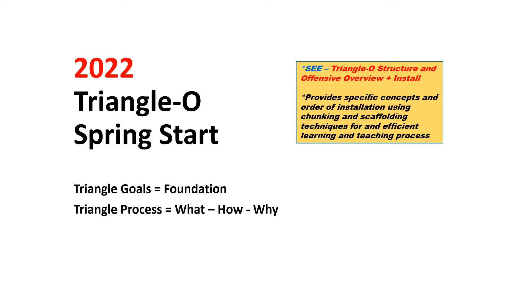Hi, Paul Hefty here with the Triangle O football system. I want to talk about your spring program start. We'll look at some specific goals to set a solid foundation and then also the process of what, how, and why. You'll want to go to the menu of Triangle O structure on the website and look at the PowerPoint and video on offensive overview and installation. It'll provide specific concepts and the specific order — what we call a three by three installation process — using chunking and scaffolding techniques so that you can be very efficient and effective in both your learning and teaching process.